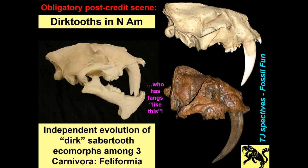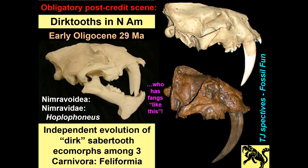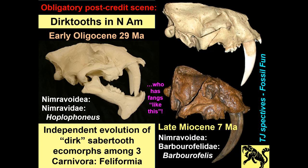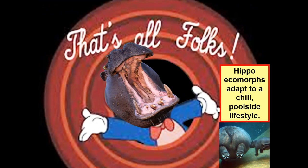And this is the obligatory post-credit scene. Dirk-tooth in North America is the independent evolution of dirk saber-tooth echomorphs among three different lineages of feliform carnivores. About 29 million years ago you had Hoplophonius, a nimravid — a cat-like animal but not a true cat. Then you had Barbourofelis, related to nimravids but a different family, which also evolved the dirk tooth about 7 million years ago in North America. And then the one you're probably most familiar with — during the Ice Age, going extinct 11 or 12 thousand years ago — was the felid Smilodon. This pattern of convergence is much more of the story, but once again, that's a different talk. Thank you.